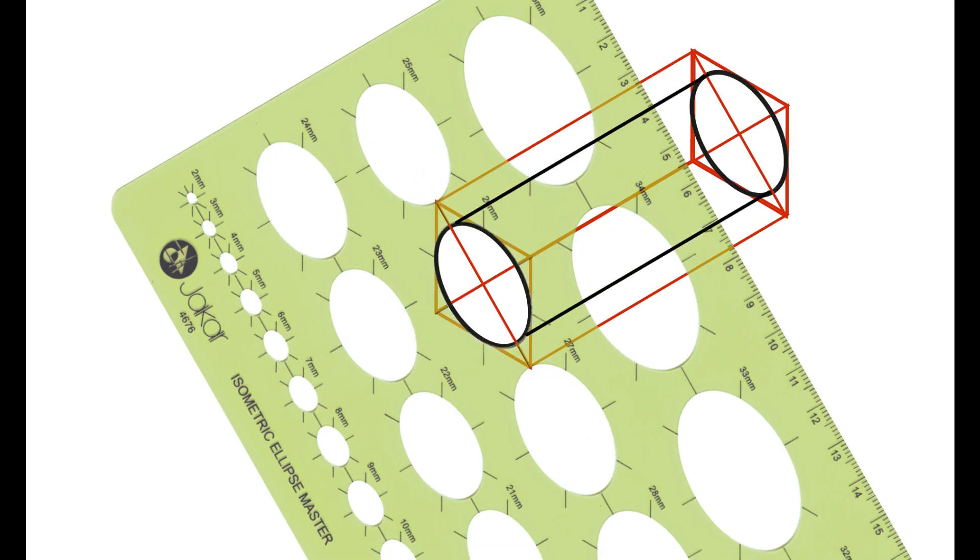To complete the cylinder, run two parallel lines on either side of the ellipses.